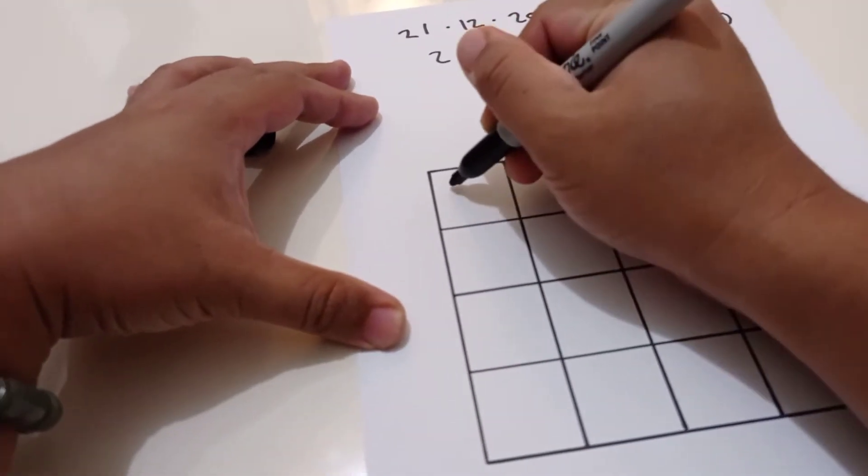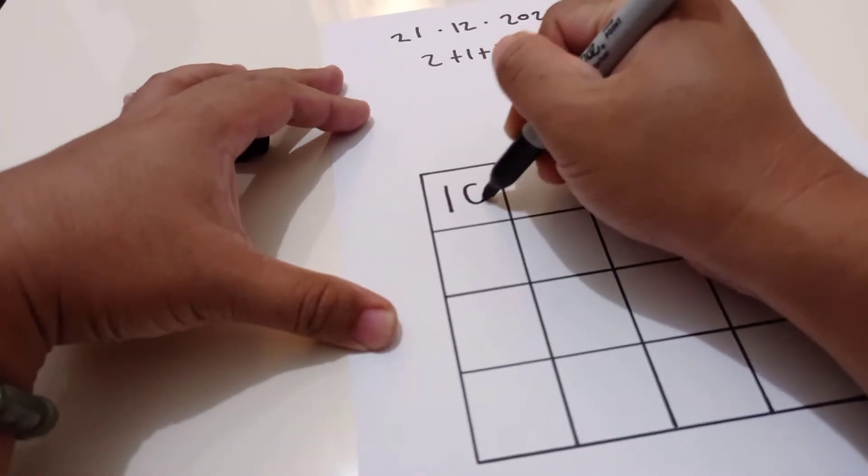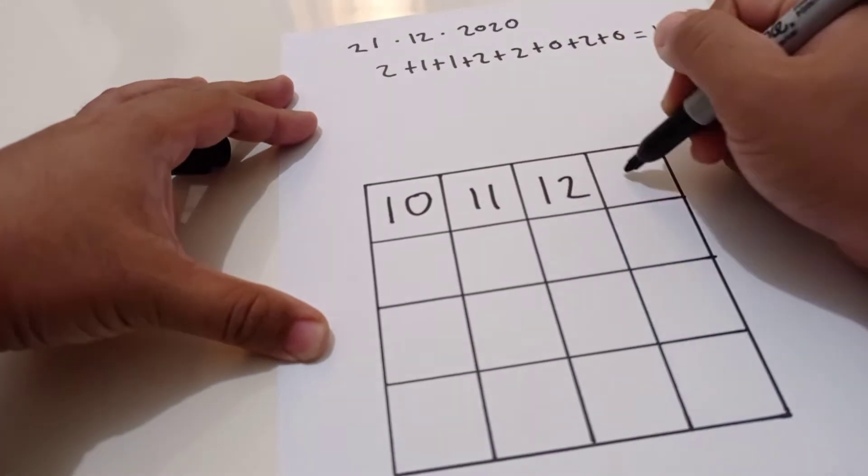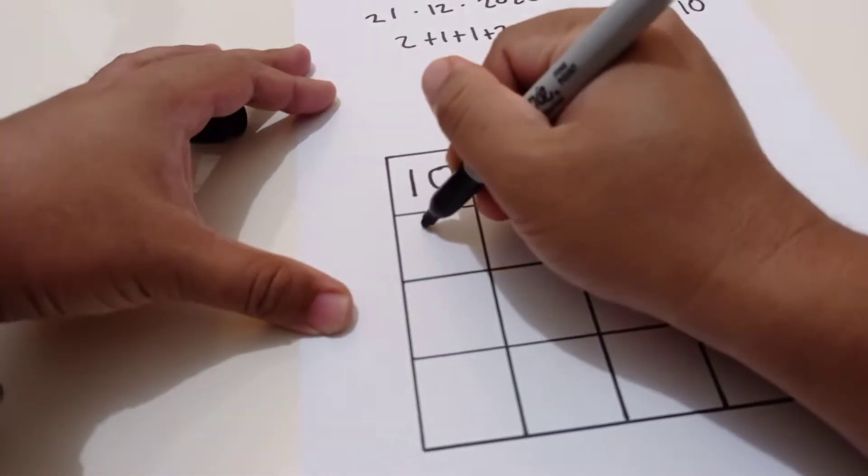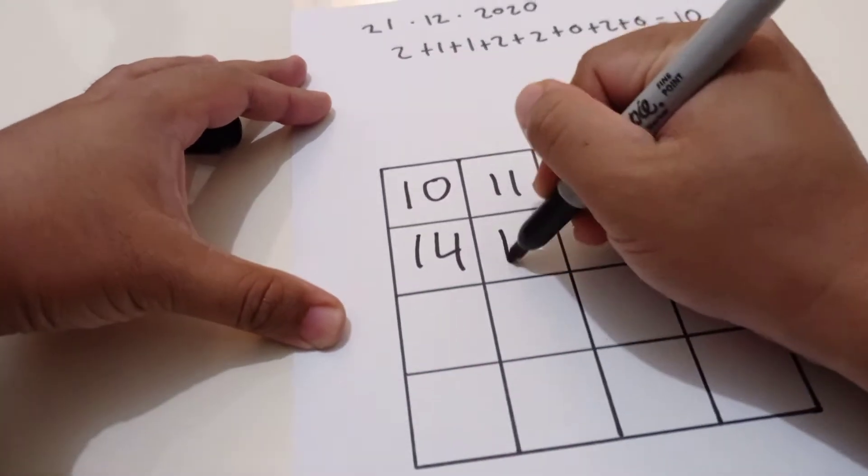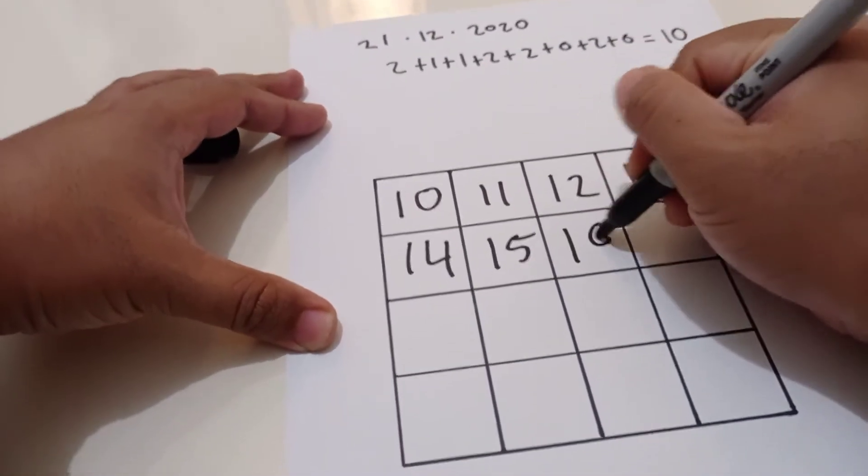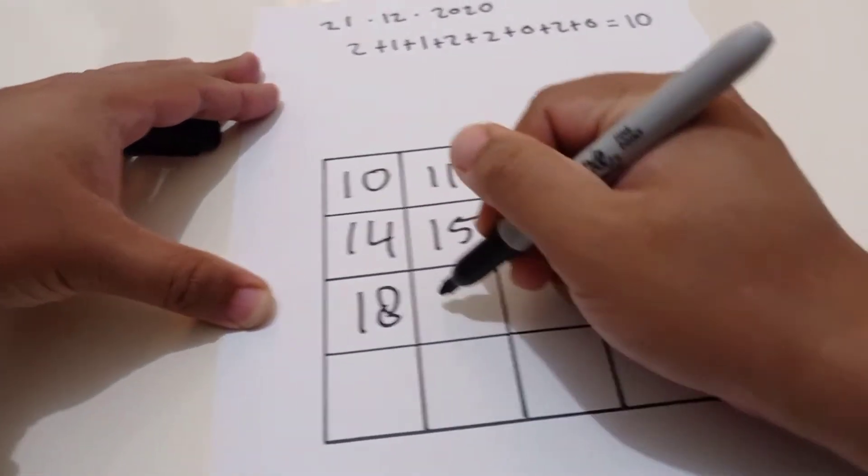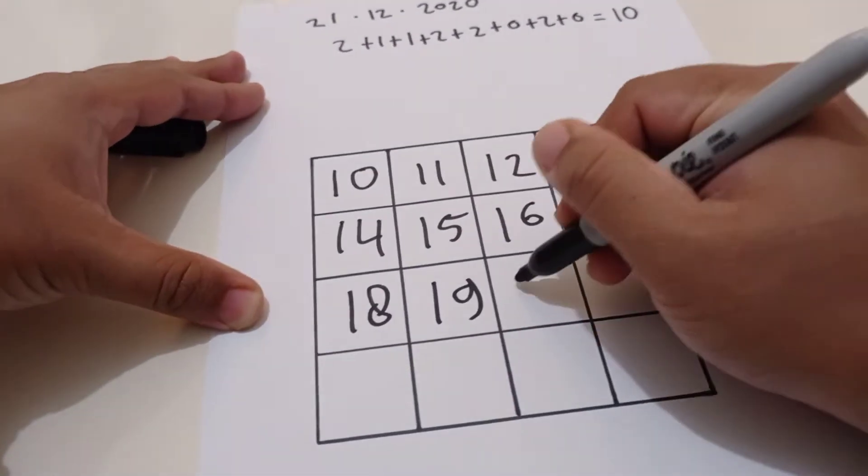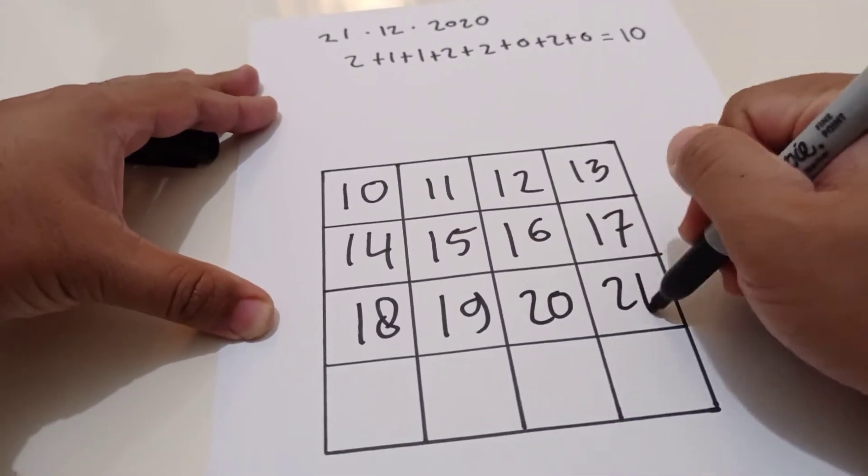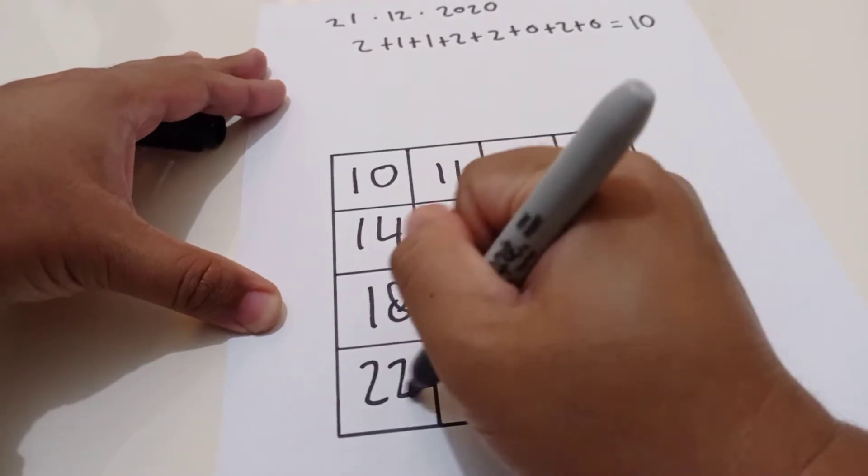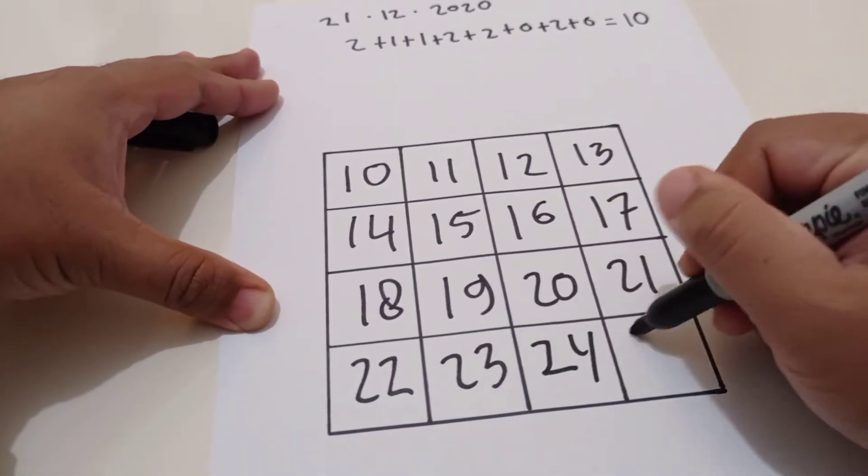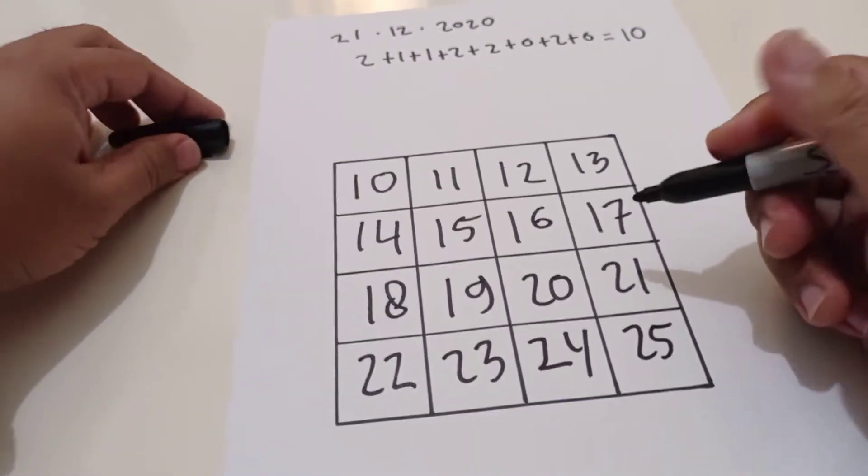That is why I need to start from 10, 11, 12, 13, 14, 15, 16, 17, 18, 19, 20, 21, 22, 23, 24, and 25. So this is the game.